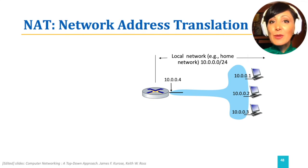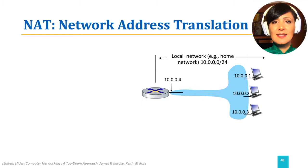Does all that we discussed mean that for each of our devices we need to obtain a globally unique IP address? Is that even possible given the number of devices we connect to the Internet every day? We use a simple approach to addressing which is called Network Address Translation.